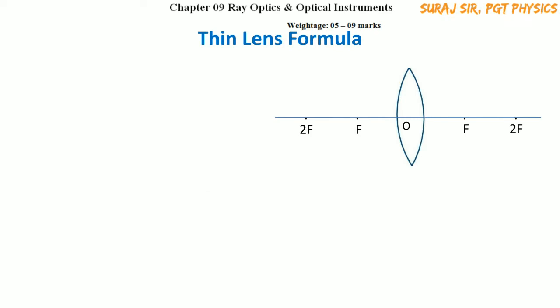For this derivation we take a convex lens as shown in the figure. The thin lens formula is 1/f = 1/v − 1/u. To derive this formula, let us take an object AB placed beyond 2f.